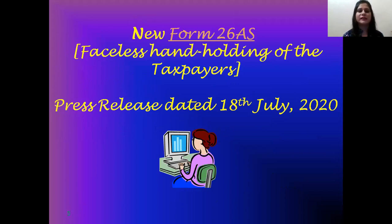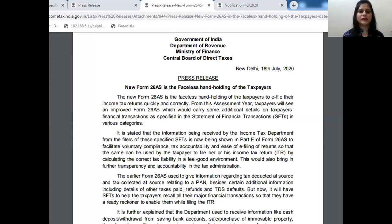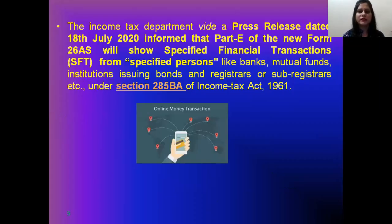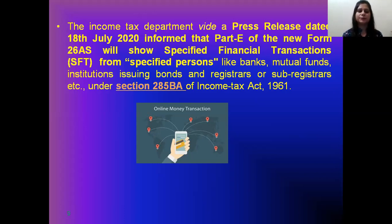New Form 26AS — faceless handholding of the taxpayers. A new press release dated 18th July 2020 informs that Part E of the new Form 26AS will show specified financial transactions. Part E has been introduced into Form 26AS for specified financial transactions from specified persons, like banks, mutual funds, institutions, companies issuing bonds, and registrars or sub-registrars.